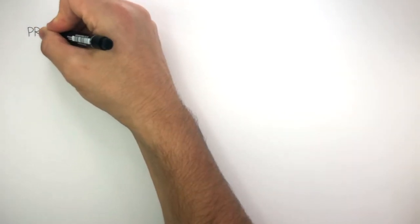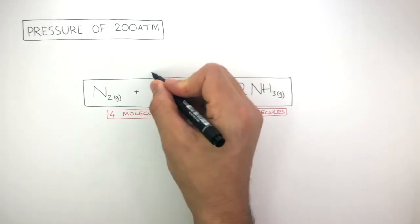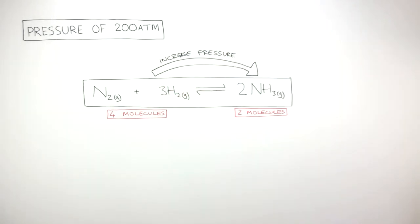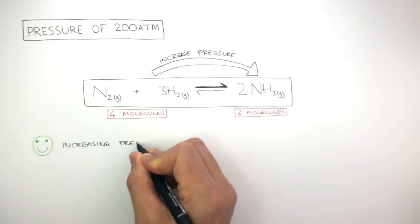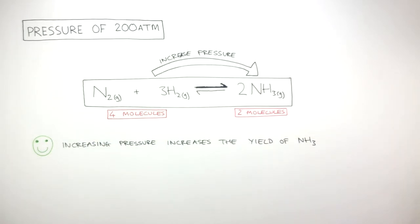A pressure of 200 atmospheres is chosen. It makes sense when we look at the balanced symbol equation because there are four molecules on the left and two molecules on the right. When we increase the pressure, this favors the forward reaction. Increasing the pressure increases the yield of ammonia as the equilibrium moves to the side with fewer molecules, favoring the forward direction.